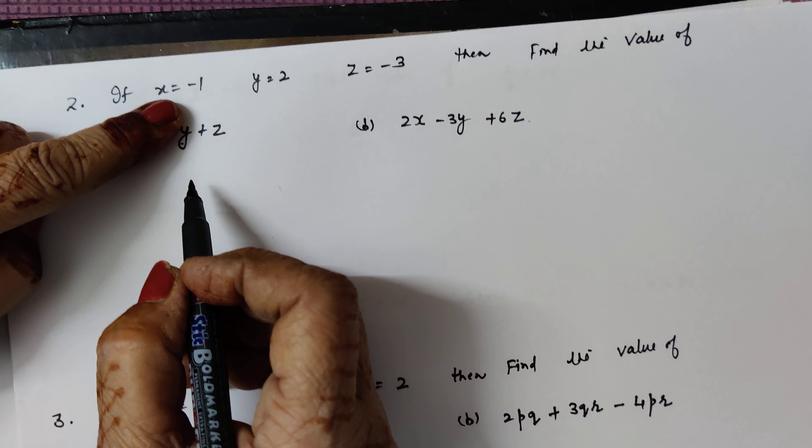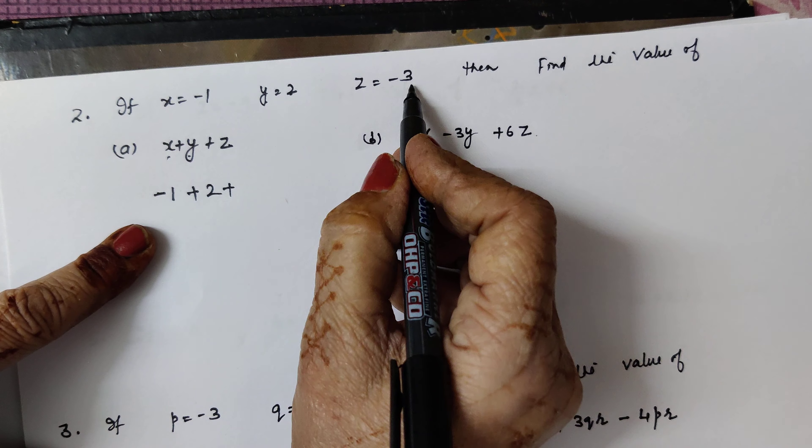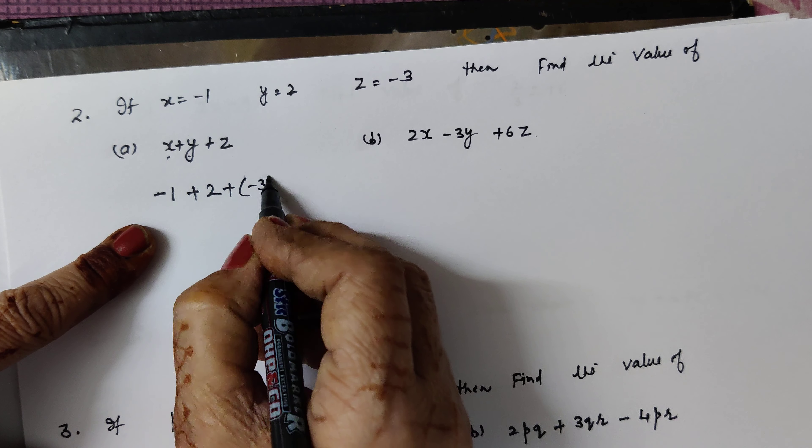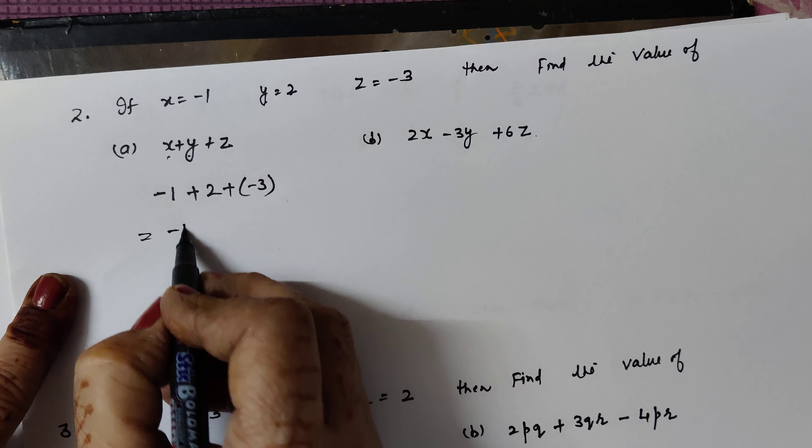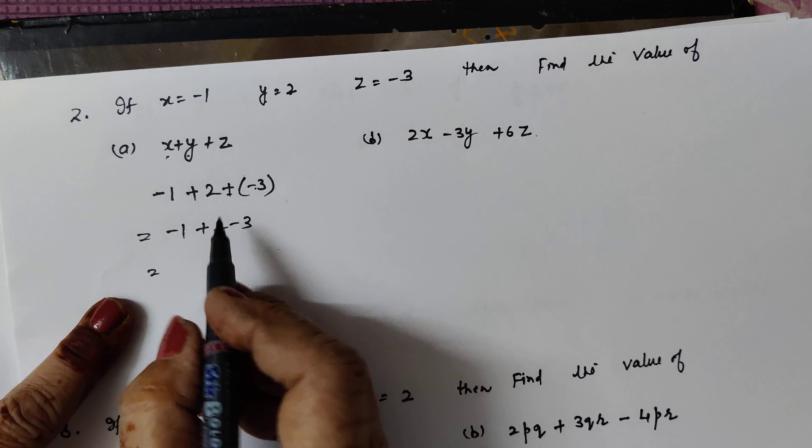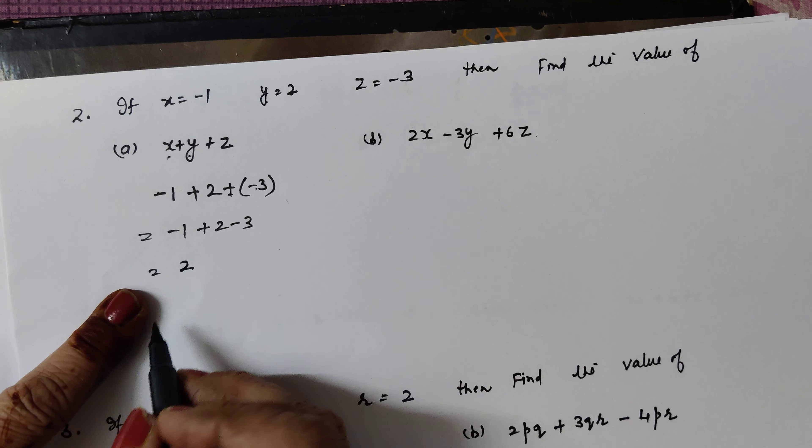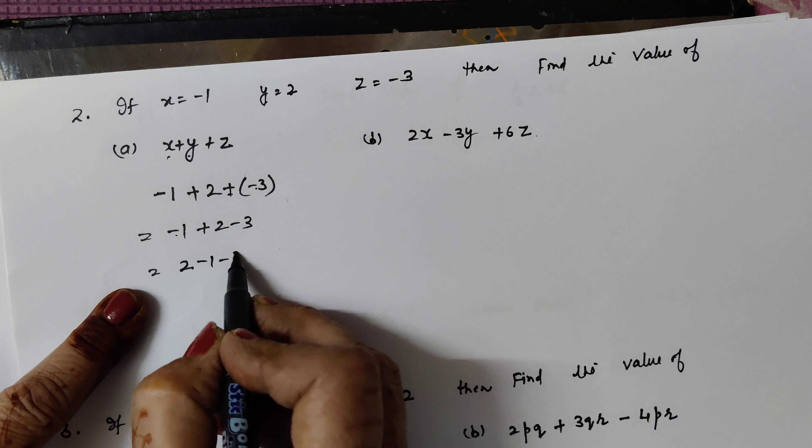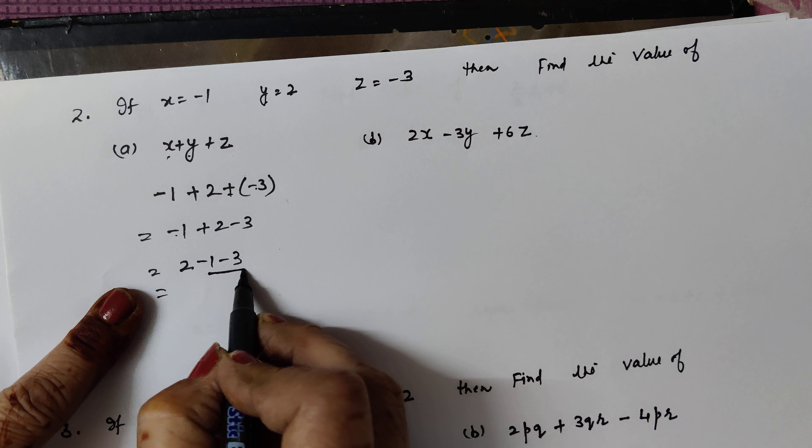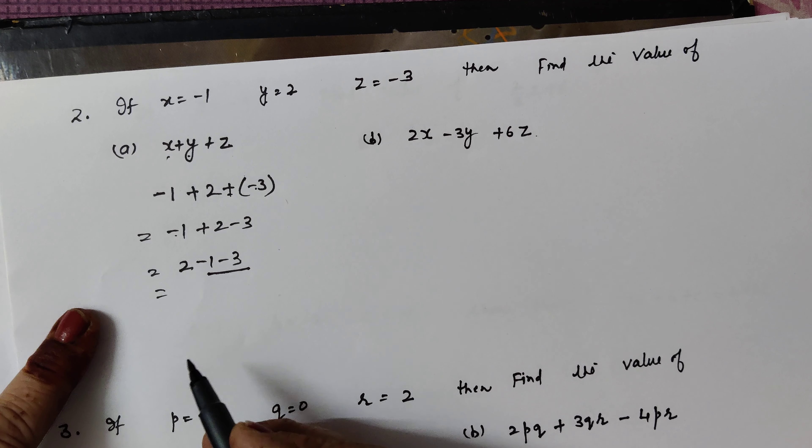Then find the value of. There is x plus y plus z, so x plus y plus z, at the place of x there is minus 1, plus at the place of y, 2, at the place of z there is minus 3. And put negative number into the bracket, minus 1 plus 2 plus minus 3. Now rearrange positive and negative. So positive number is 2, I have written at the first, negative we take back.